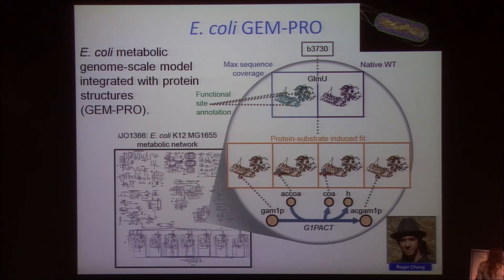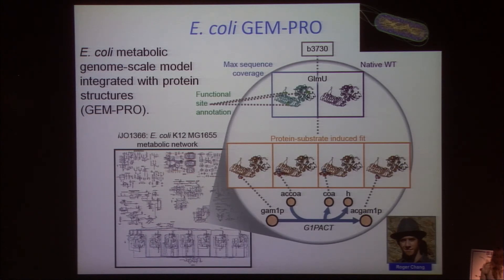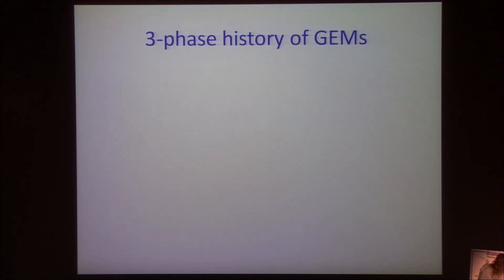We are now mapping protein structures onto the model. Roger Chang, who was co-advised by Phil Bourne and me, just graduated last week, and we now have full representation of all protein structures in the metabolic model. This has allowed us to compute the thermal stability of the entire proteome, predict growth rate as a function of temperature, predict the intervention in metabolism by antibiotics, and so forth. Remarkably, this has proven to be quite predictive.